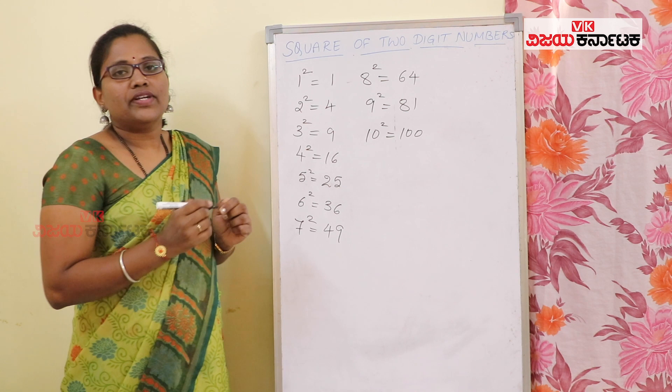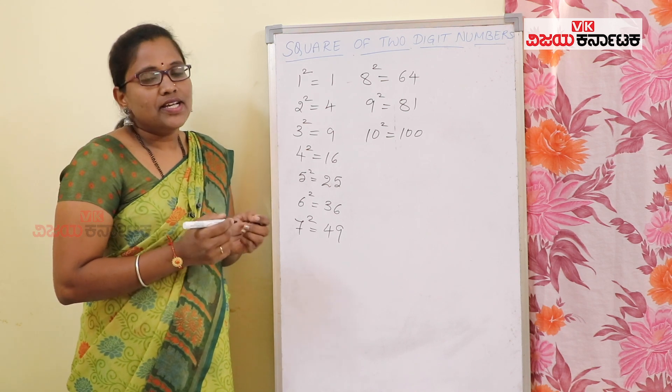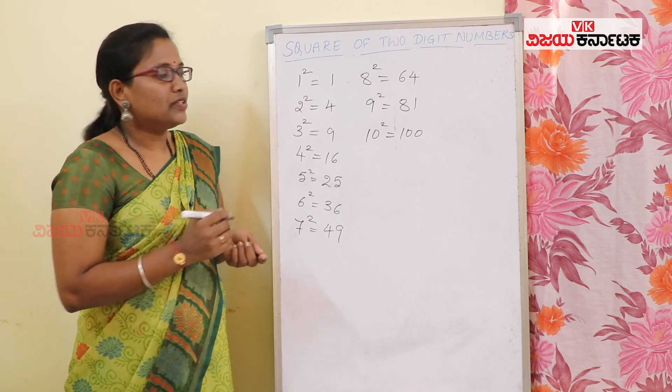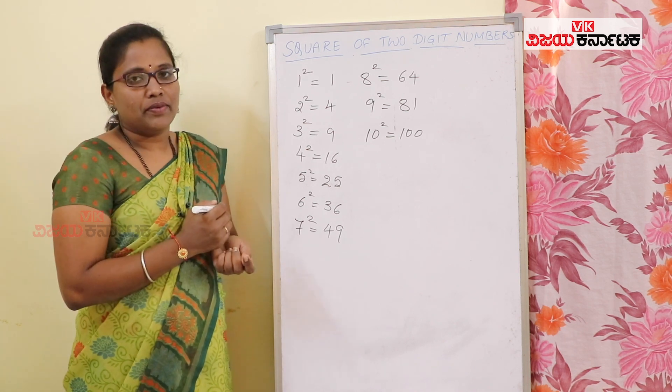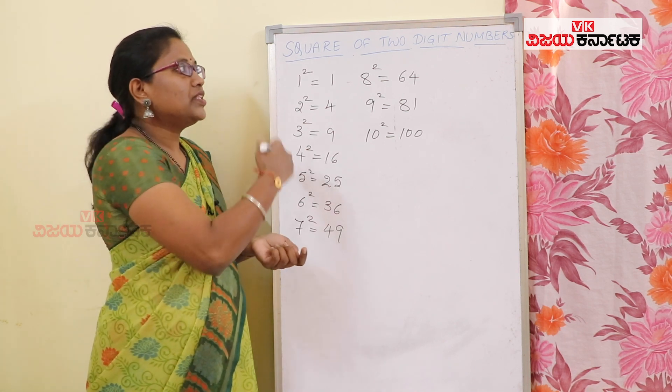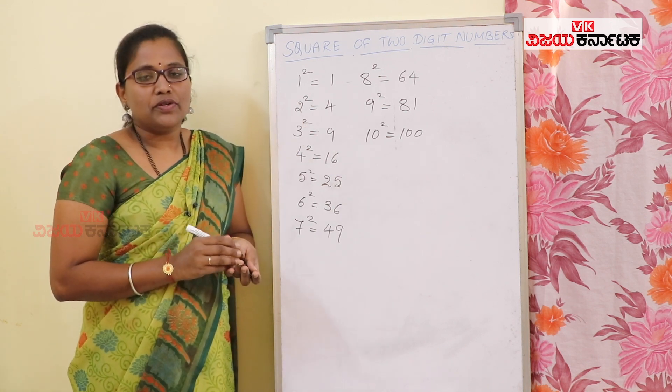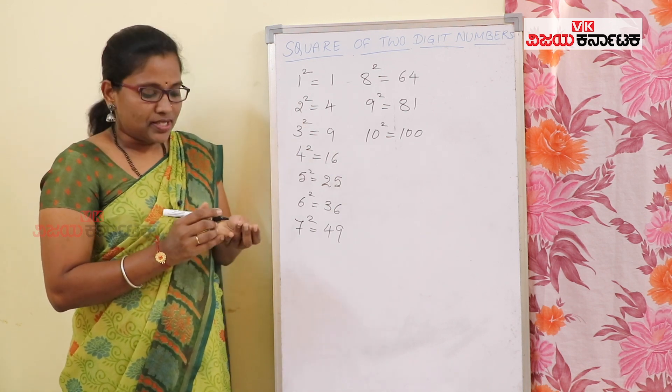So this is the one-to-ten digits square. If you want to see two-digit numbers as square, it is very easy.